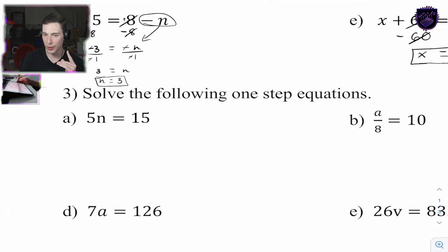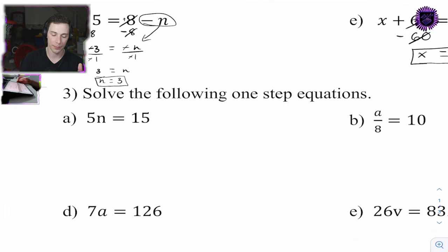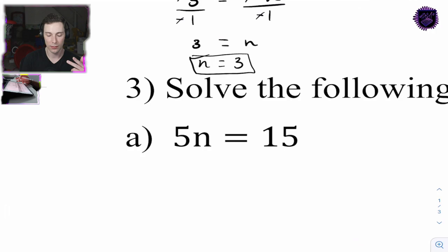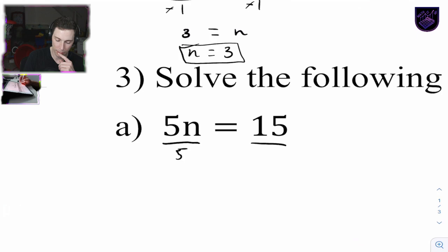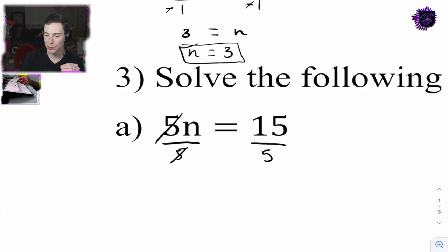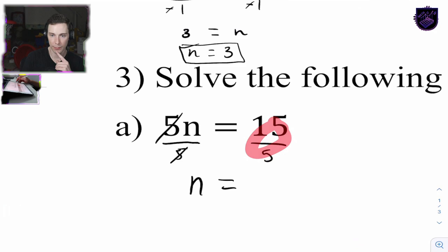Now we're solving one-step equations using multiplication and division - so we have to un-multiply and un-divide. To isolate the variable, we apply the inverse operation with the same amount. The first one is 5n equals 15. 5n is 5 times n. We're going to divide both sides by 5. It cancels on one side, leaving n equal to 15 divided by 5, which is 3. N equals 3.